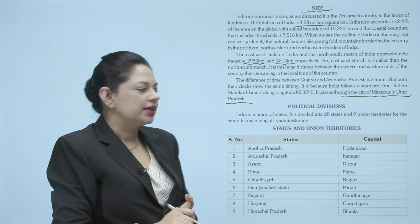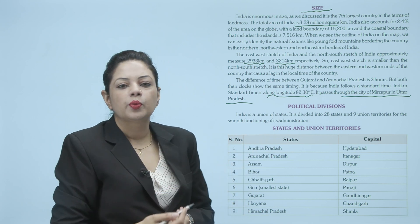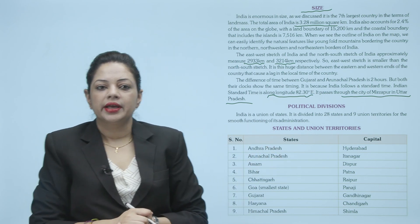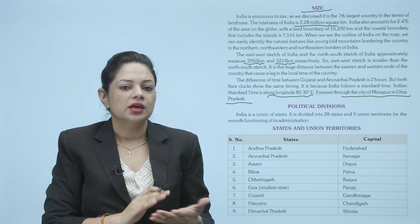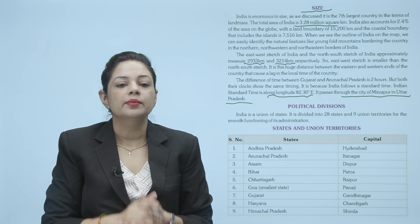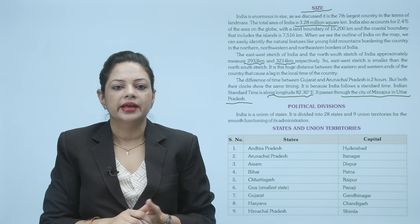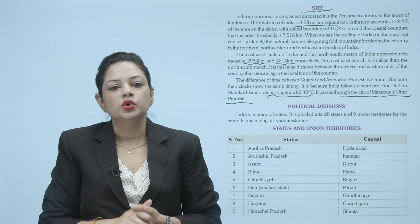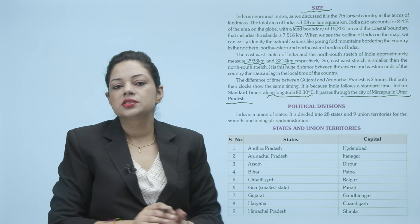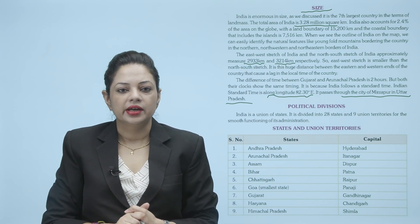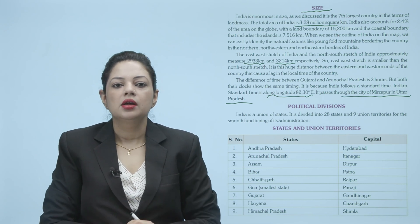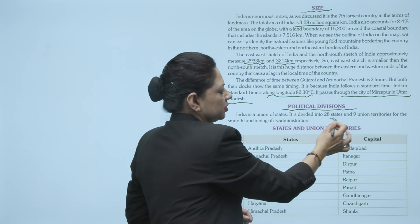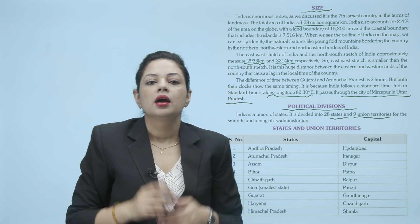India ko vertically ek line pass out karti hai, jisko standard meridian kehte hain, that is at 82.30 degree east, aur kahan se pass out karti hai? Yeh UP se Mirzapur se pass out karti hai. 82.30 degree east par jo time fix hota hai, usko Indian Standard Time ka naam diya gaya hai aur poore India ka jo time hai woh wahin se match hota hai. Ab political divisions: India mein 28 states hain aur 9 union territories hain.